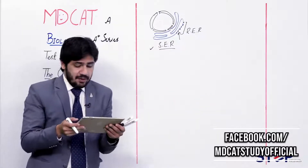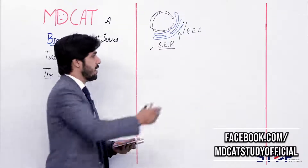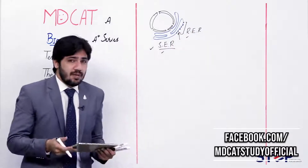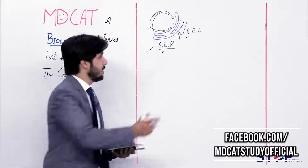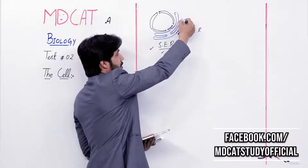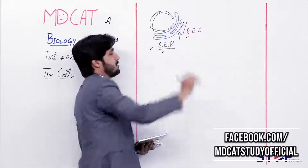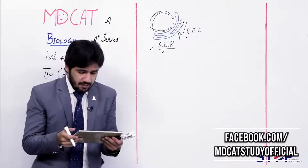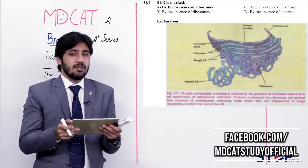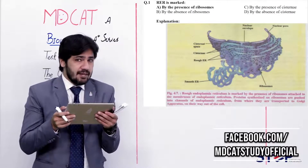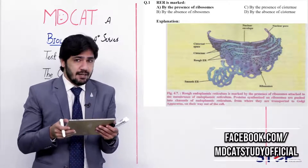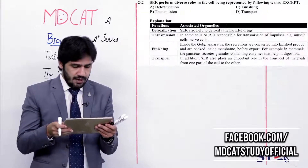The option beta (absence of ribosomes) refers to SER. Charlie mentions the presence of cisternae — the cisternae membrane separates the content of the reticulum from the outer cytoplasm, and it is present in both SER and RER. Delta (absence of cisternae) is also incorrect since cisternae membrane is present in both. Therefore delta is also not right.